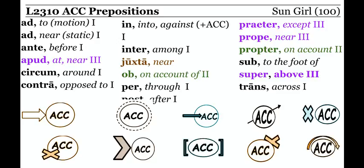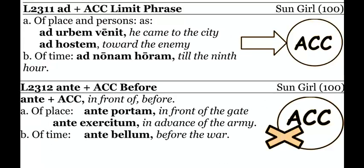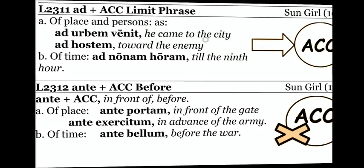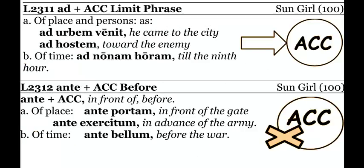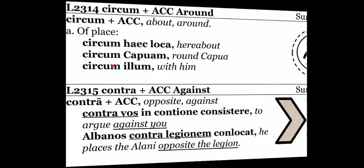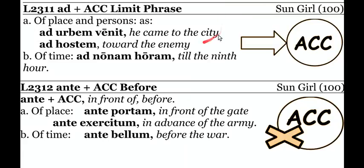Ad plus the accusative is used for limit phrases when dealing with a verb of motion. It can go with people and also for time — to the ninth hour. Ante plus the accusative means in front of a place, like in front of the gate, or in advance of the army. For time, it means before — before the war, before midday.